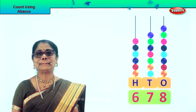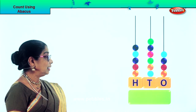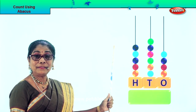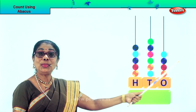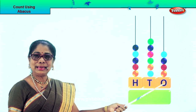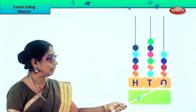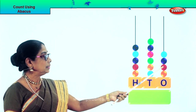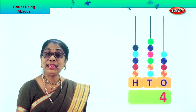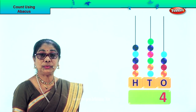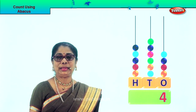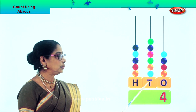Let's take another sum and learn to count using this abacus. First, what shall we count? The 1s. Go to the 1s place — let's see how many beads: 1, 2, 3, 4. There are 4 beads in the 1s place, so we write the number 4 here.